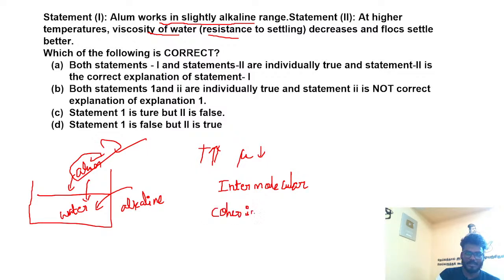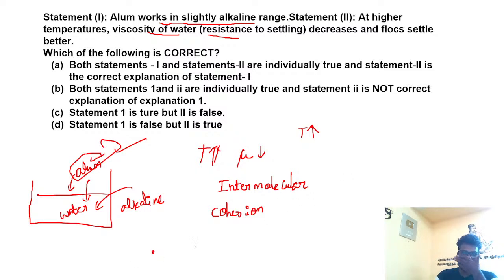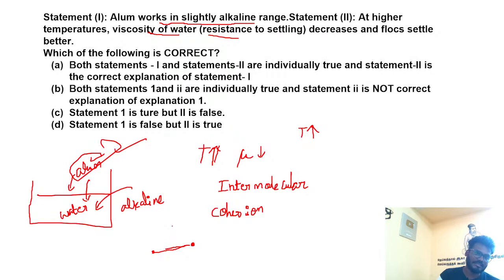If temperature increases, intermolecular cohesion will decrease. The bond between molecules is the intermolecular force of cohesion. As temperature increases, these bonds break. If intermolecular cohesion decreases, viscosity will decrease.